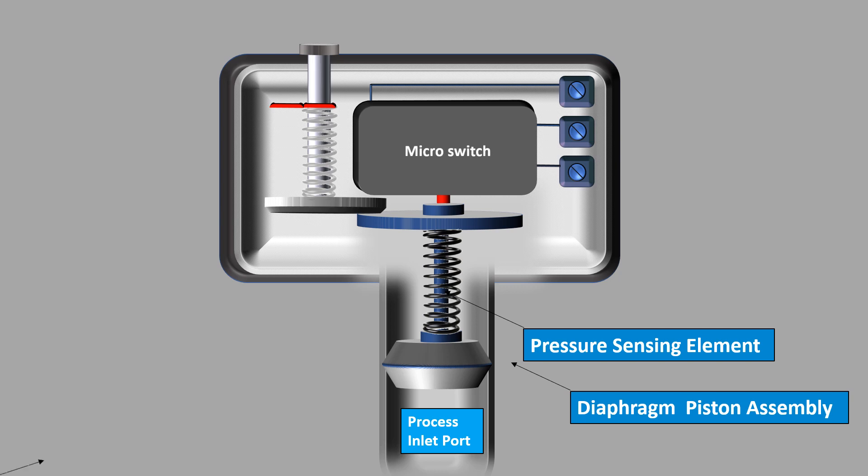Range spring: The range spring counters the force from the fluid. It is preloaded to match the operating pressure of the fluid. The switch only activates when the force from the fluid pressure exceeds the force applied by the spring.